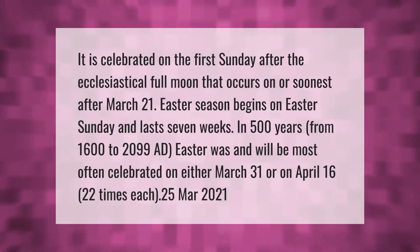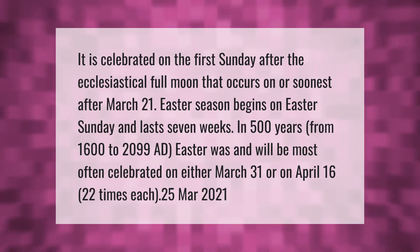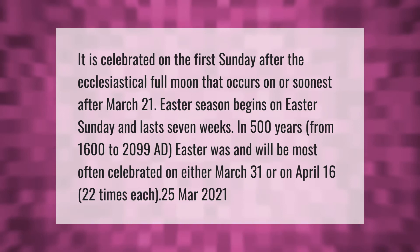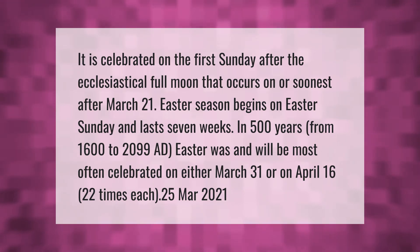Easter is celebrated on the first Sunday after the ecclesiastical full moon that occurs on or soonest after March 21st. The Easter season begins on Easter Sunday and lasts seven weeks. In 500 years from 1600 to 2099 A.D., Easter was and will be most often celebrated on either March 31st or April 16th — 22 times each.